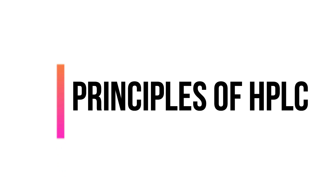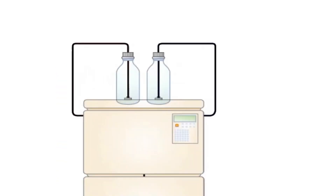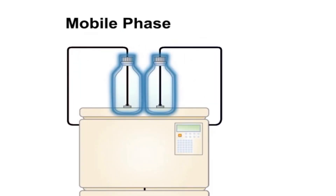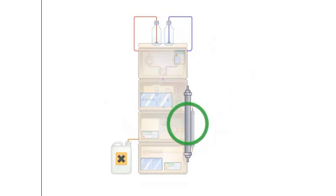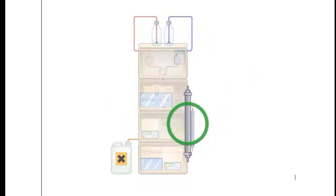The HPLC instrumentation consists of a series of simple components. First, the mobile phase, held in solvent reservoirs, is pumped through the system by one or more pumps at a constant flow rate. The sample is injected into the mobile phase stream by the sample injector.